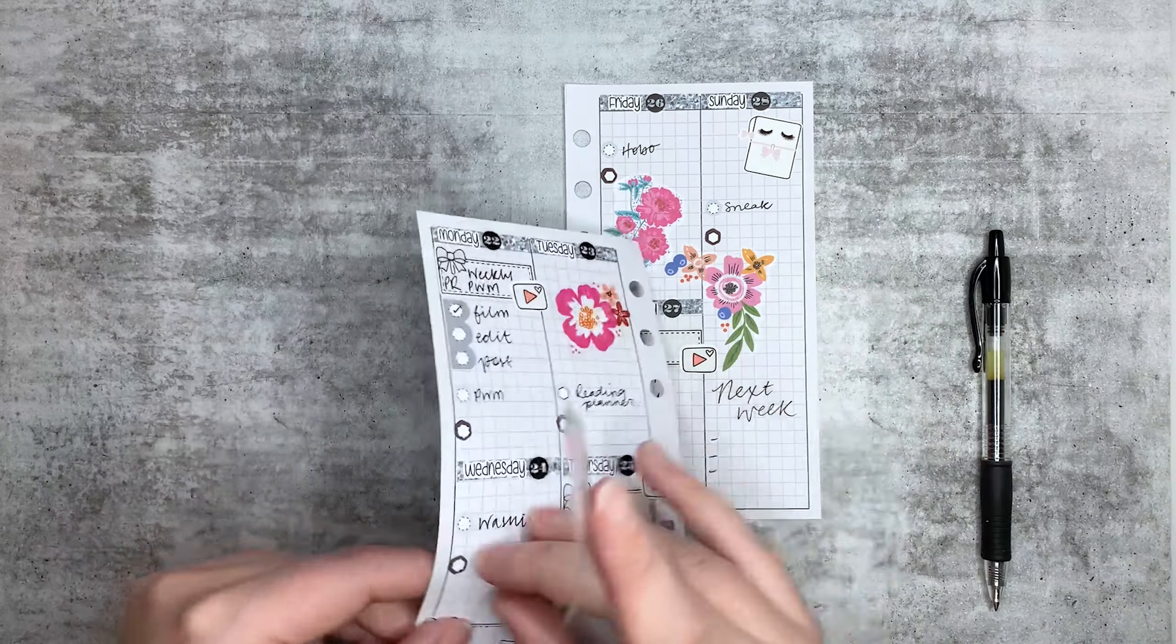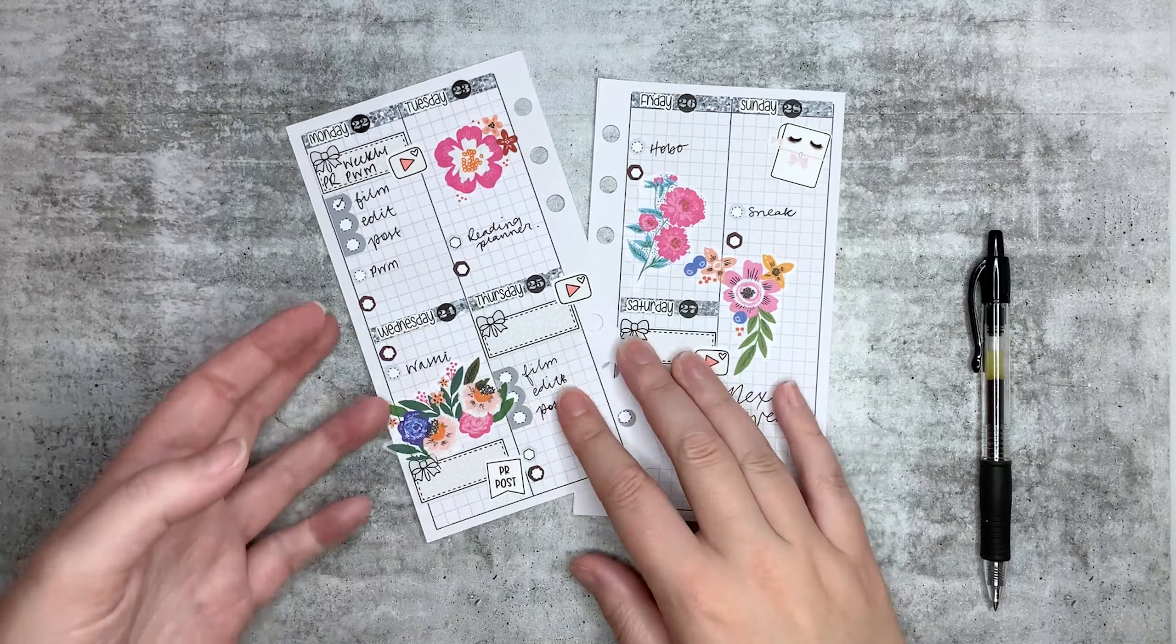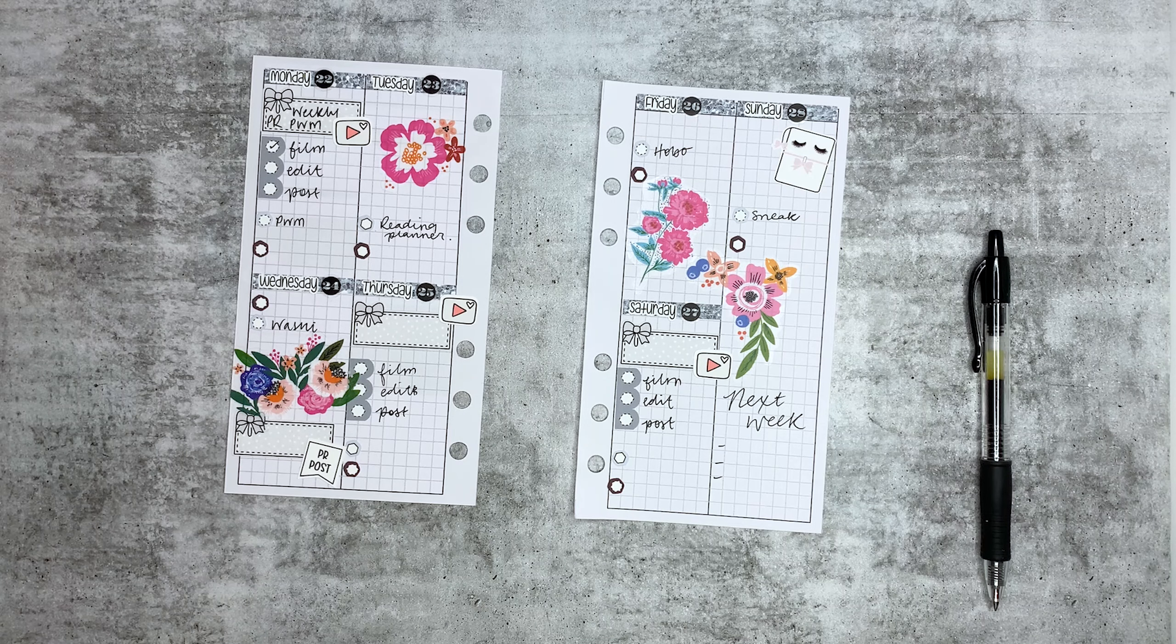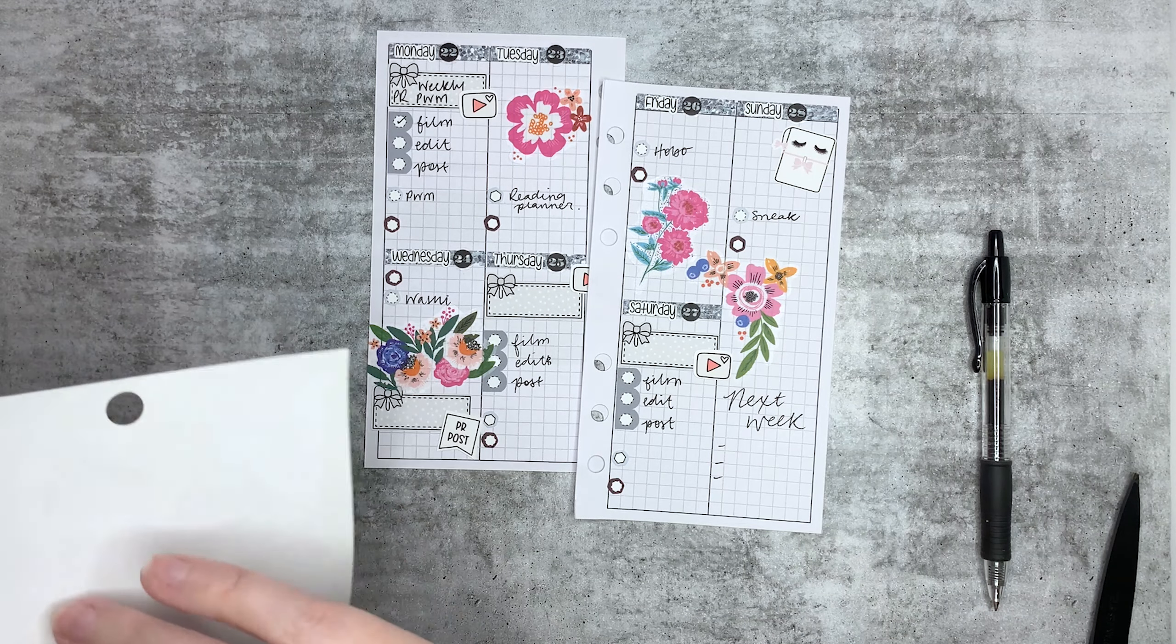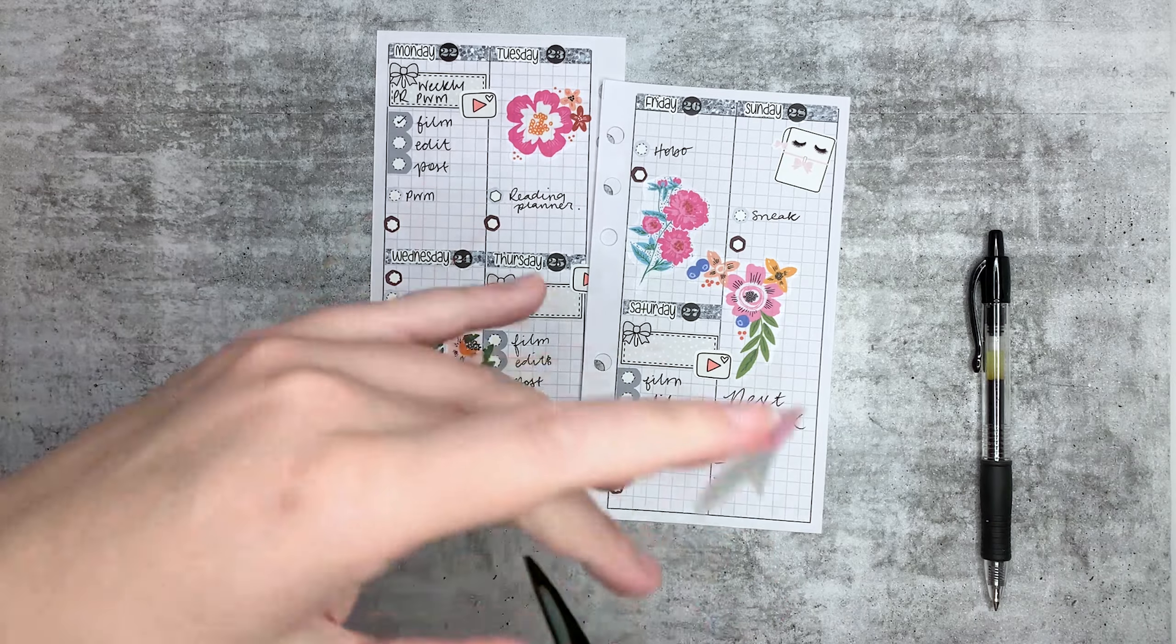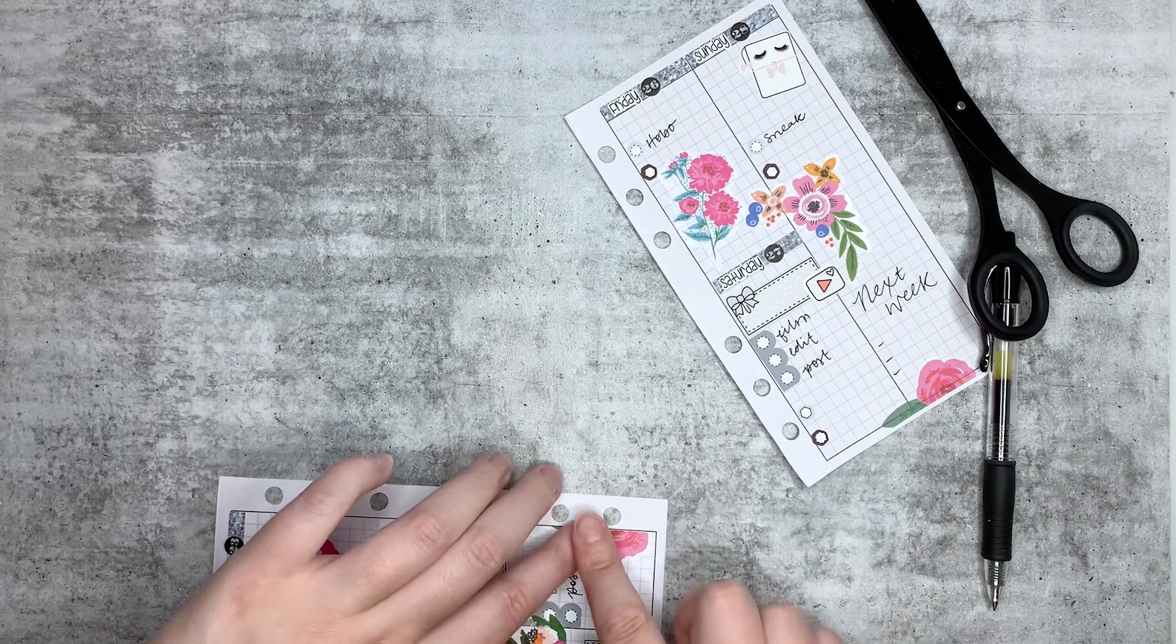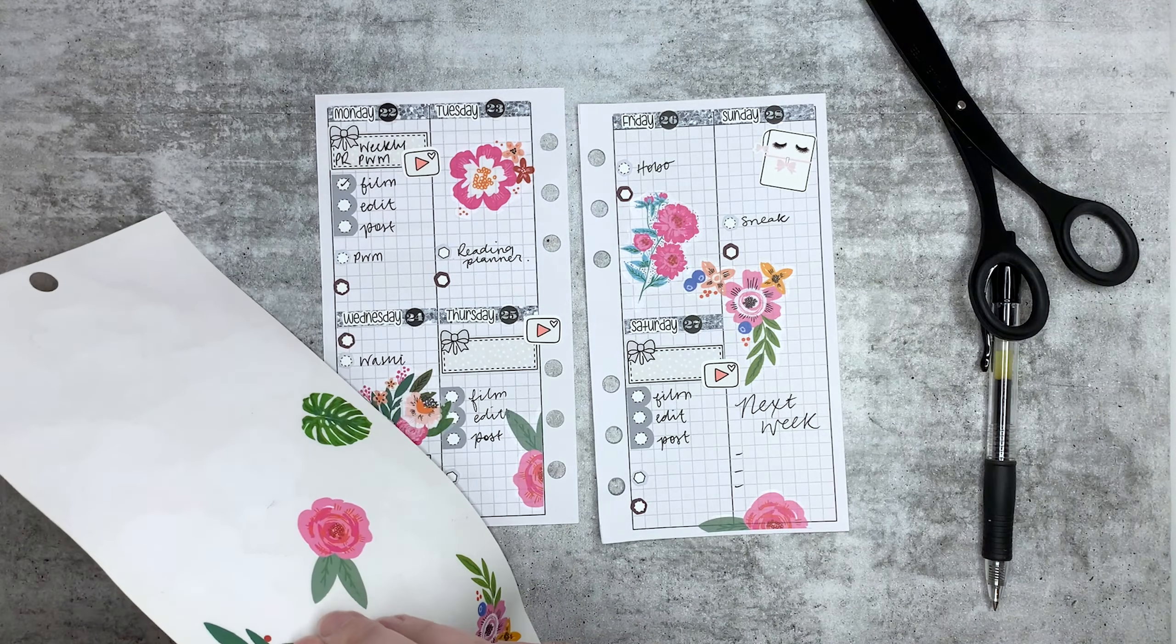That one's there. And just trim that off. And just a little bit of sticker surgery. Do I do that again, or do I use like this? I think I might just use this.